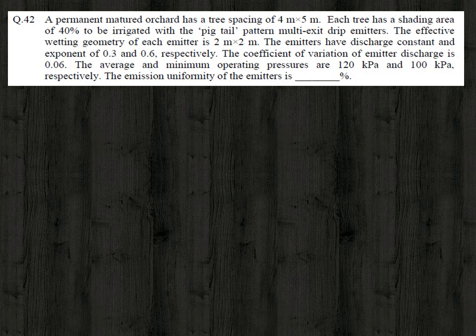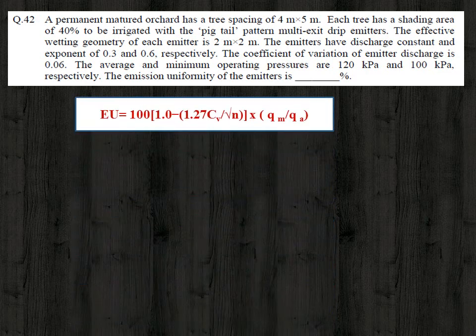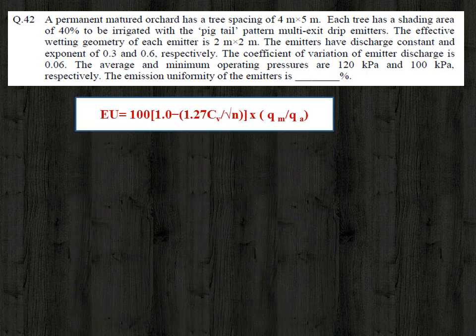The coefficient of variation of emitter discharge is 0.06. The average and minimum operating pressures are 120 kPa and 100 kPa respectively. We are asked to find the emission uniformity of the emitters using the empirical equation: EU = 100 × [1 − 1.27 × CV / √n] × (qm / qa).